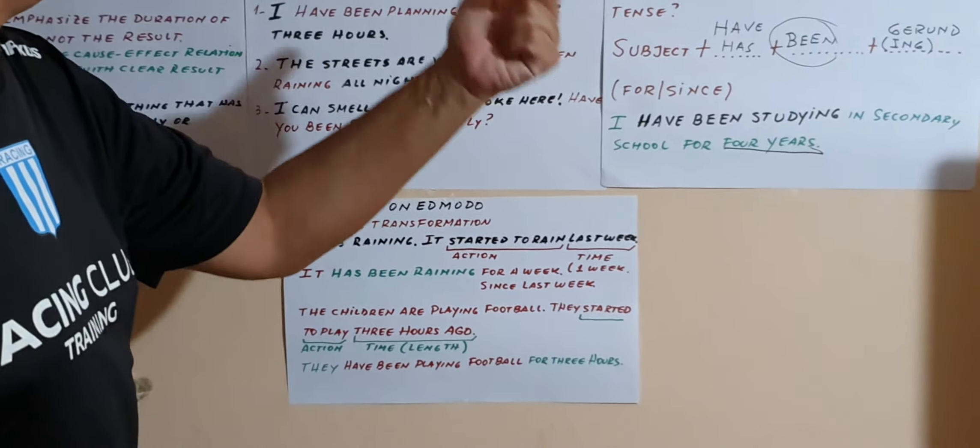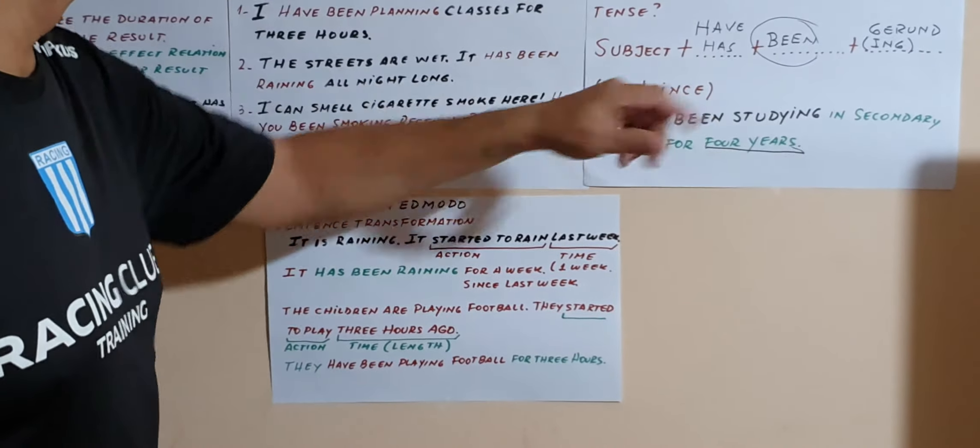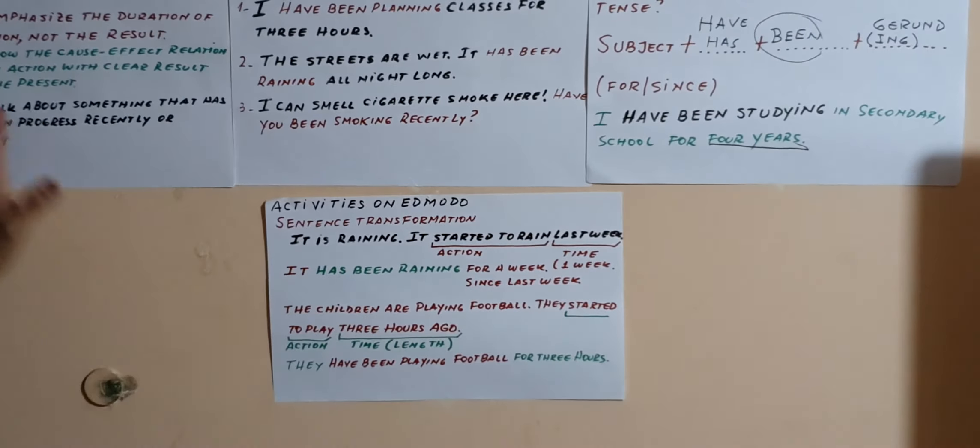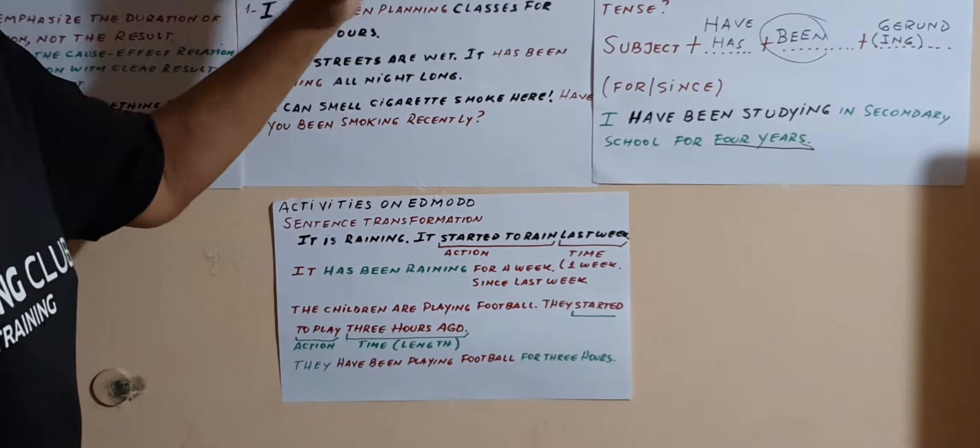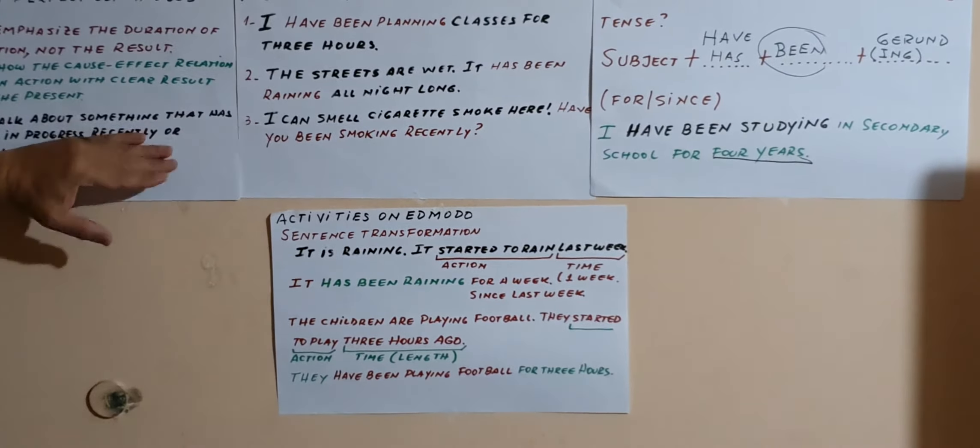Recuerden que have is used with I, you, we, they, and has with he, she, it.